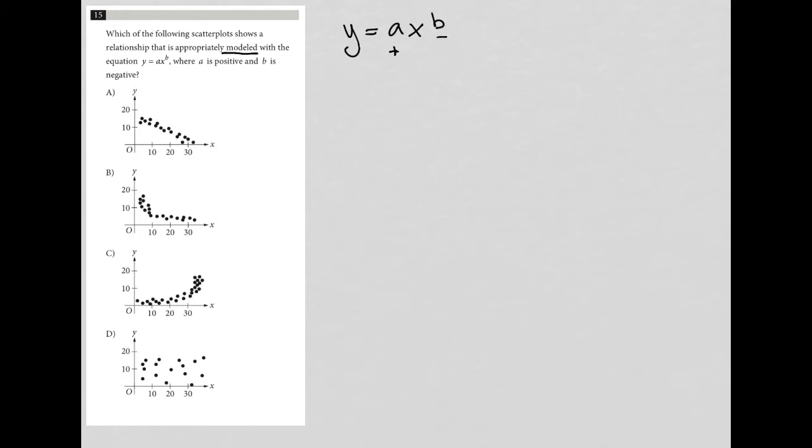With that being said, I'm going to use a strategy called plug in your own number, P-I-Y-O-N. I use this strategy here because I wish I knew what A equaled and I wish I knew what B equaled, because if I knew those numbers I could just graph the equation in a graphing calculator and be done.